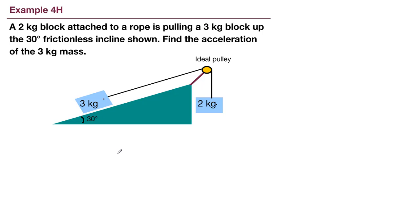Alright, so the first thing we need to recognize is that when we have two objects, we must draw two separate free body diagrams. So we'll start by drawing the free body diagram of the three kilogram block, because that's the one that we also have to be aware of our other standard practice with ramps, which is to draw an angled coordinate system.